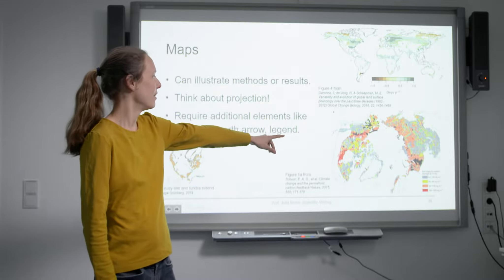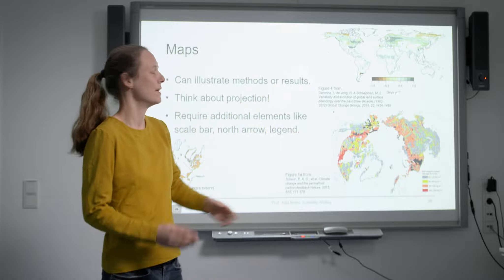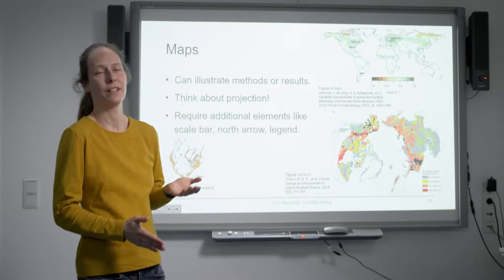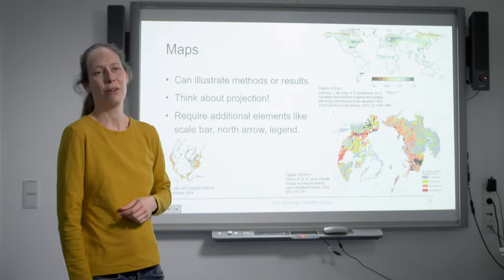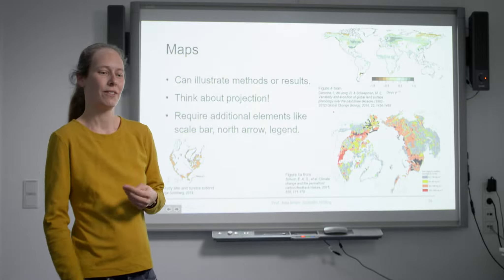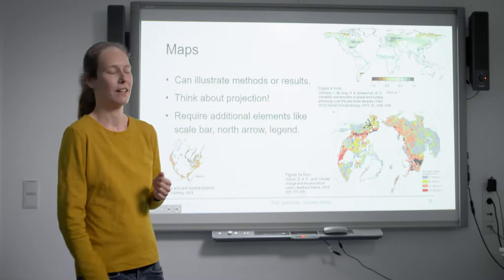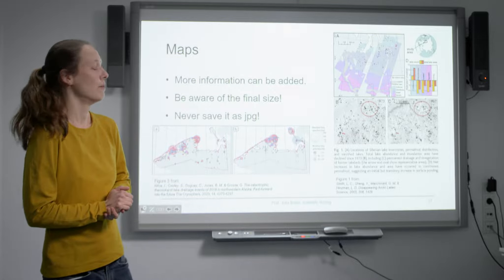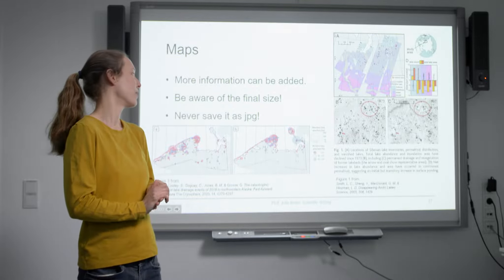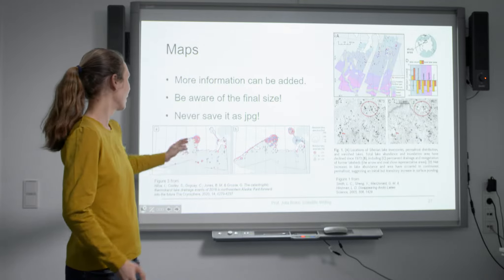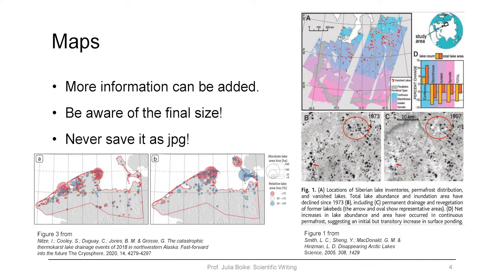For maps you always need to consider different additional elements which usually in the end take up quite a lot of space. For example here we are lucky that the legends can be quite small, but sometimes if you have really a lot of different elements the legend can almost be as big as your map, which is very unfortunate but you can't help it. Here are two more examples of maps to highlight two different things.